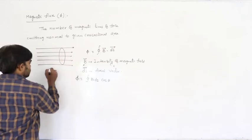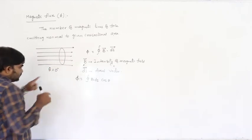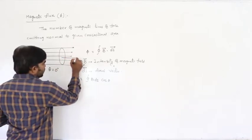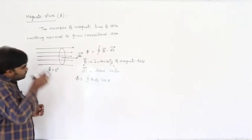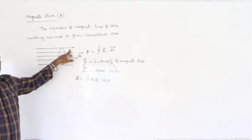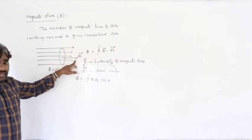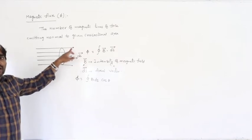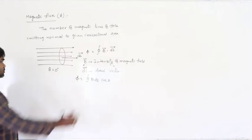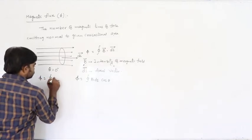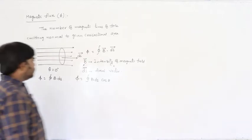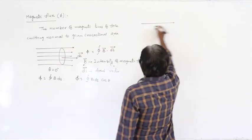Here θ is the angle between the areal vector and the direction of the magnetic lines. When θ = 0 (both in the same direction), φ = ∫B ds. This is the case when the magnetic lines pass directly normal to the surface.